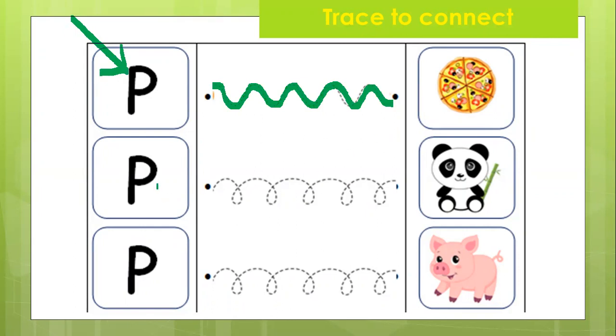Next, P is for panda. It's a panda living in a bamboo, right? P is for panda. Trace. You trace by using this kind of circle. You see? It's a line that you have to make a circle in it.